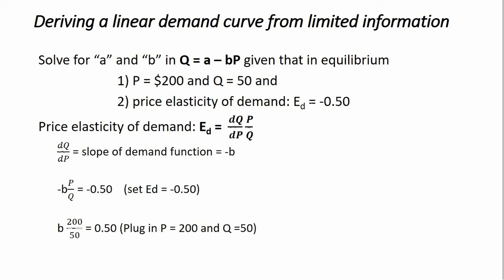In equilibrium, we're told that the equilibrium price is 200 and the quantity is 50. So in equilibrium, where demand intersects supply, the price is 200 and the quantity is 50. We're also told that in equilibrium, the price elasticity of demand is given by minus 0.5.